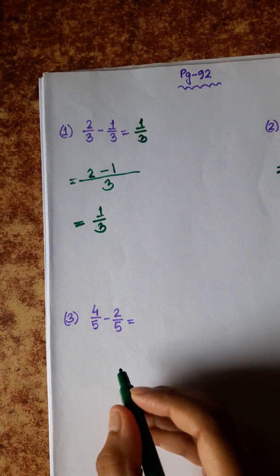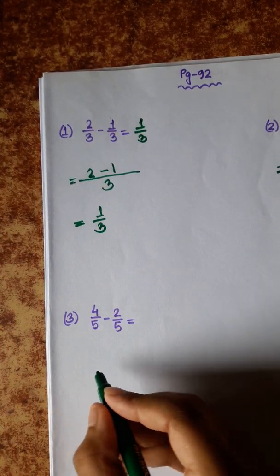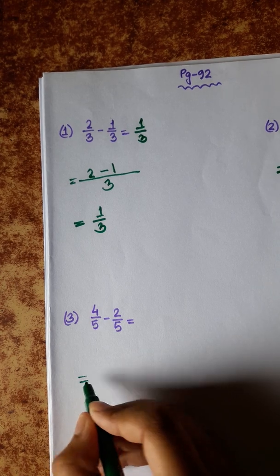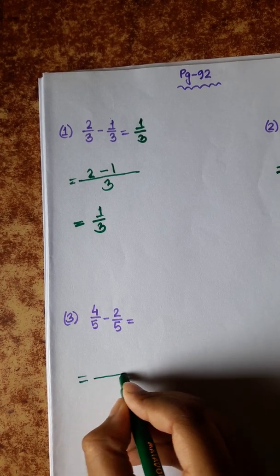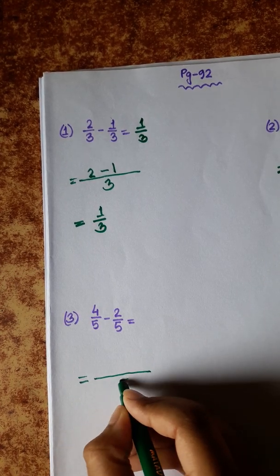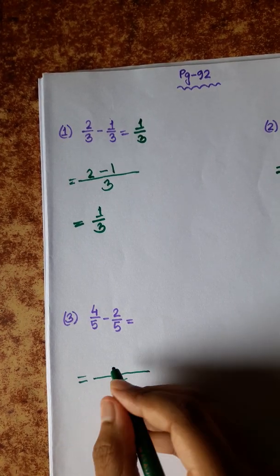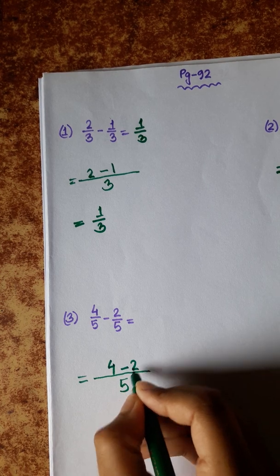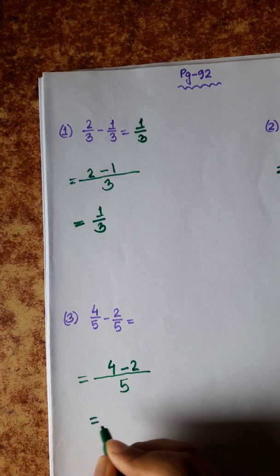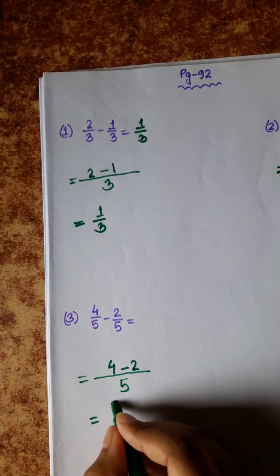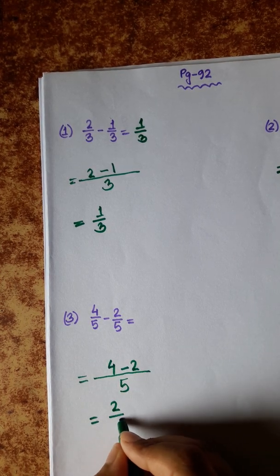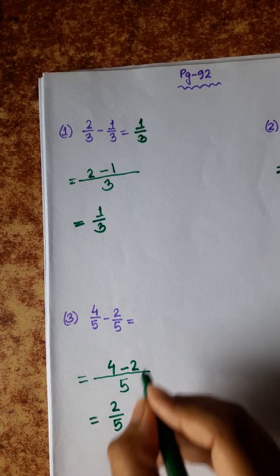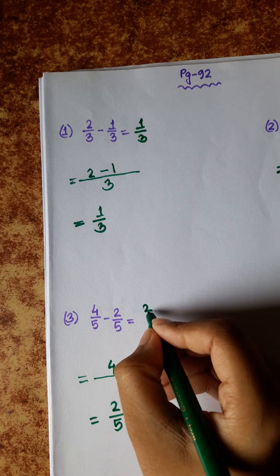4 by 5 minus 2 by 5. Denominator same, so denominator is 5. 4 minus 2 equals 2. So the answer is 2 by 5.